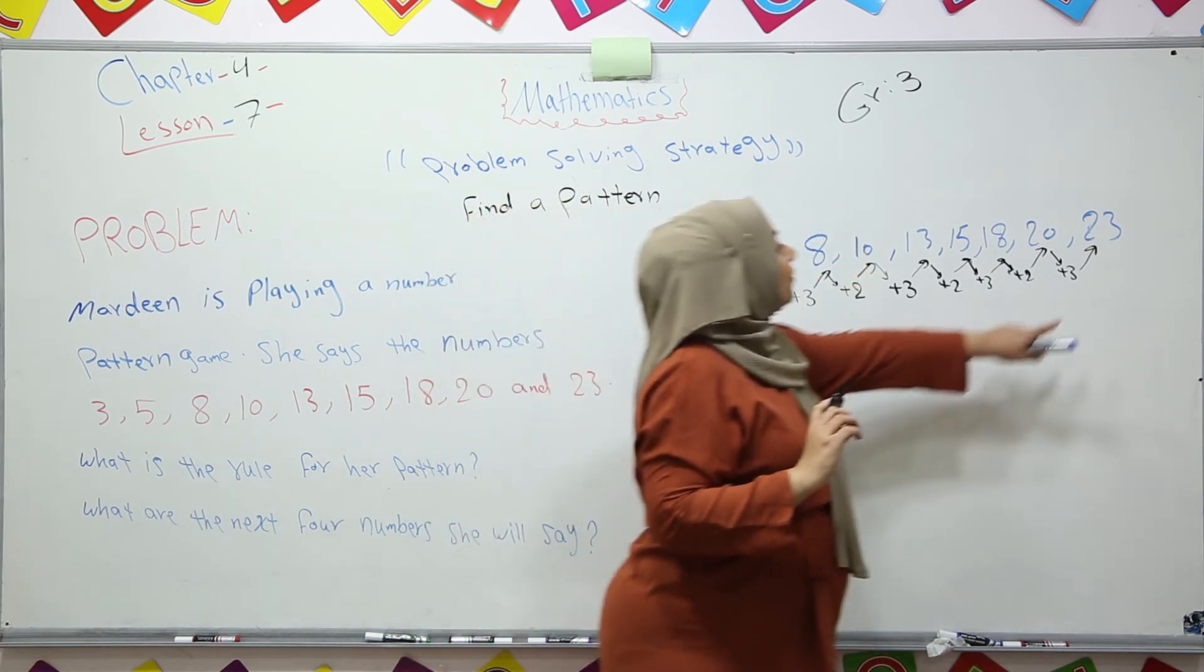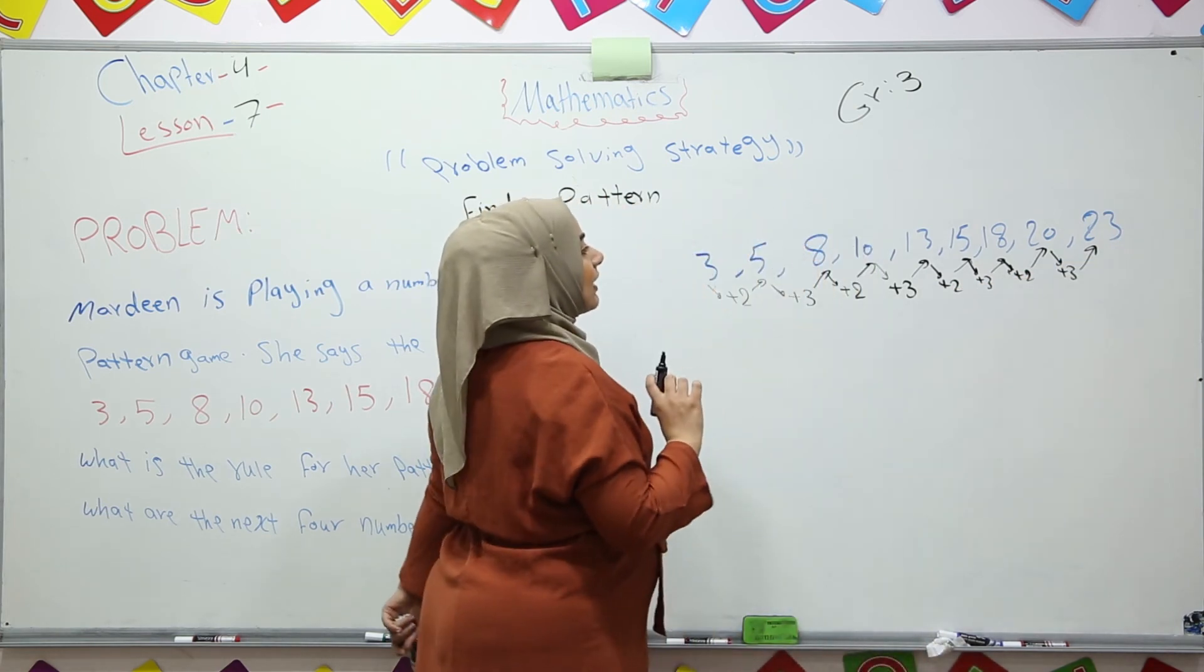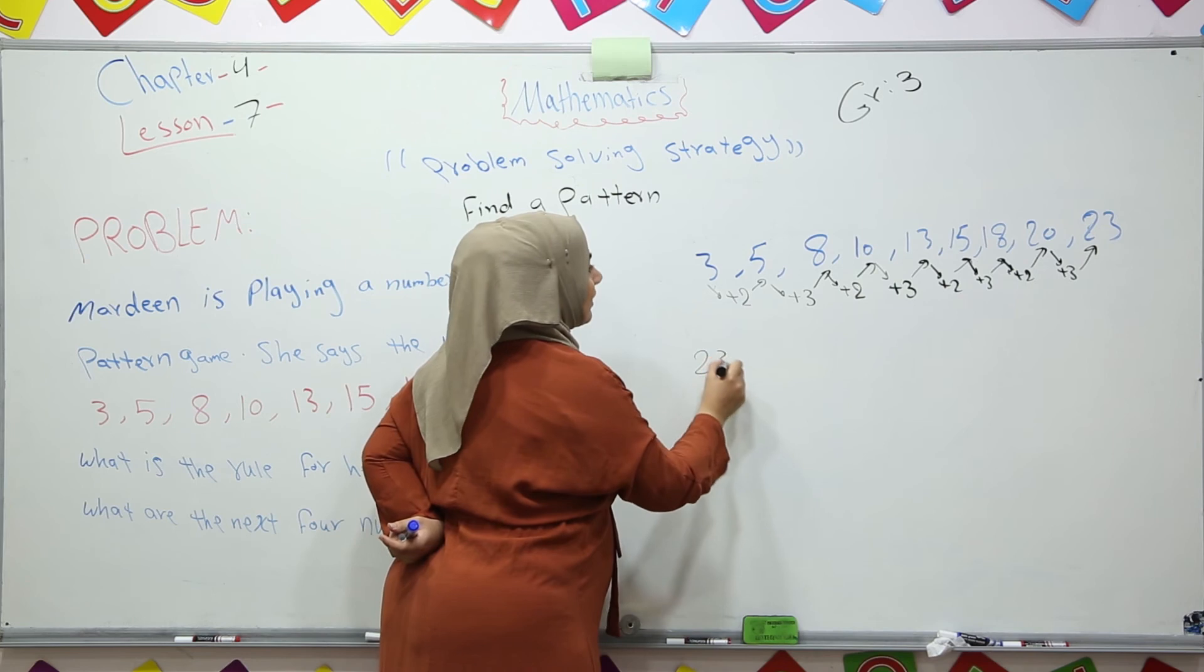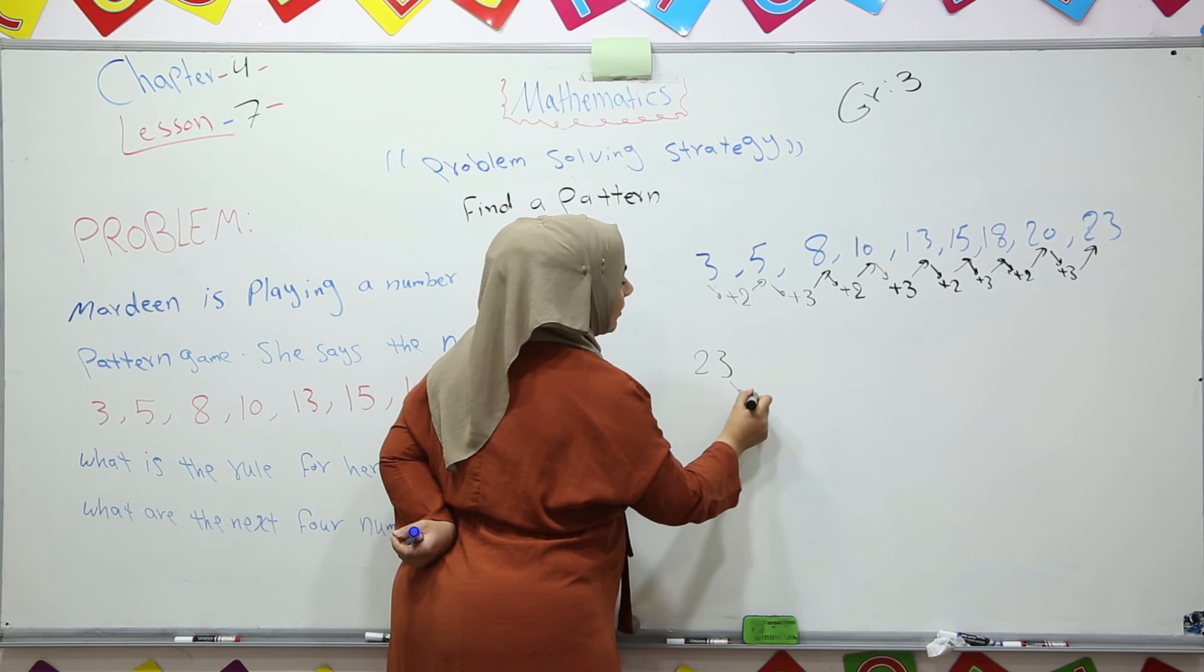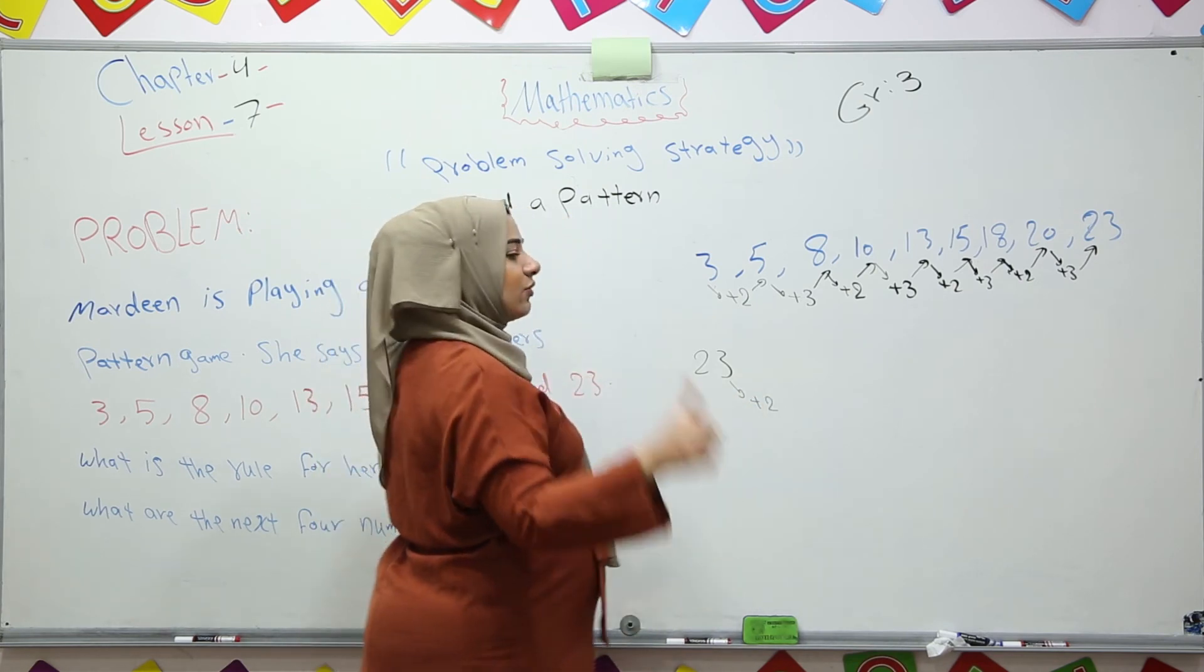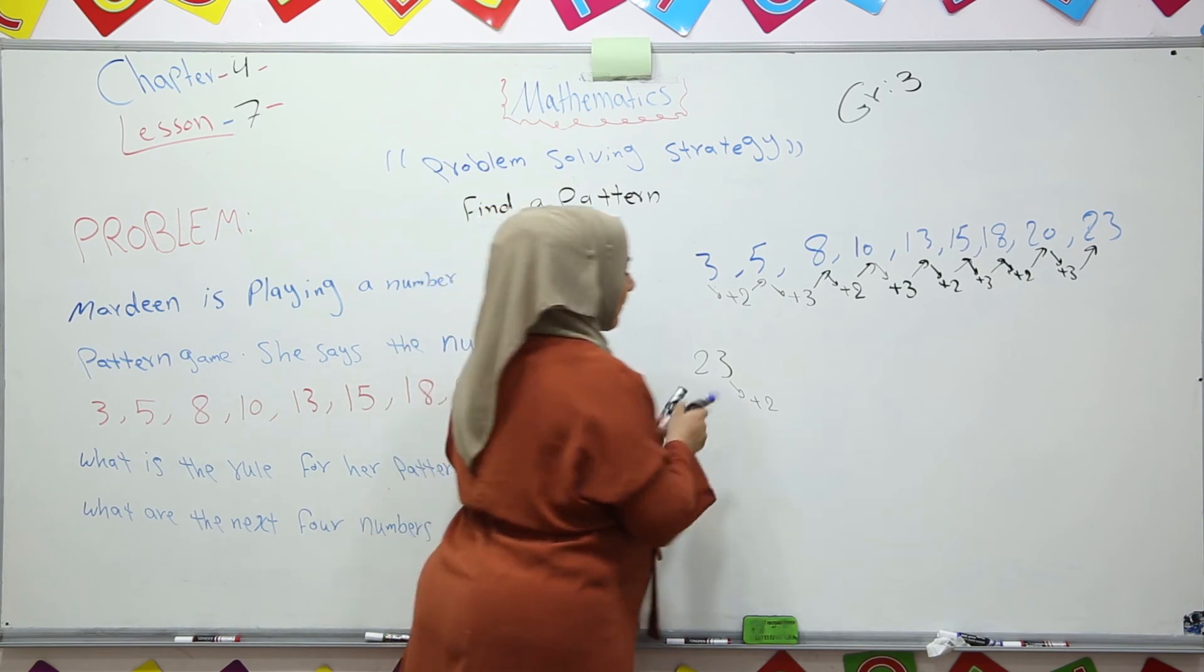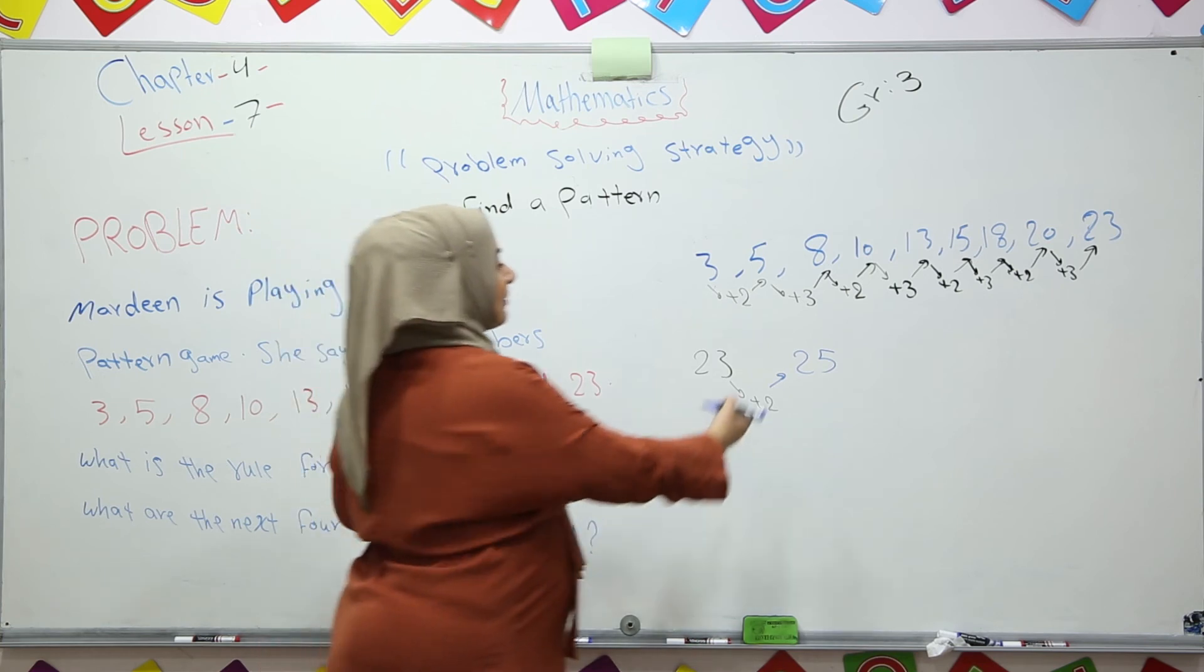Now it is time to find the 4 numbers after 23. Here it is added by 3. So you should add it by 2. Plus 2. 23 plus 2, 24, 25. So it is 25. We found one number.